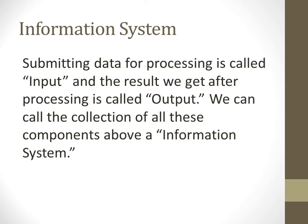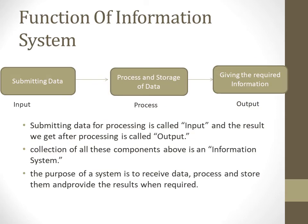Let's see what an information system is. Data submitted for processing is called input, and the results we get after processing that input are called output. That means we are giving some input, processing it, and taking some output. The whole collection of these components or processes can be called an information system.